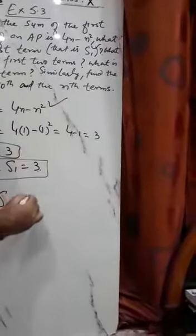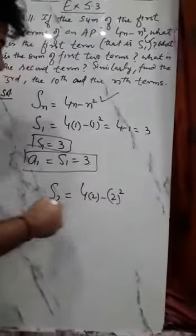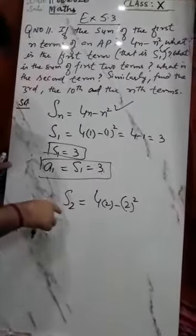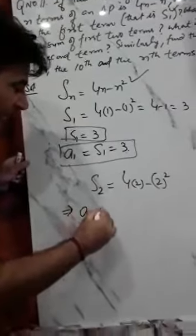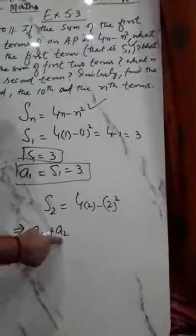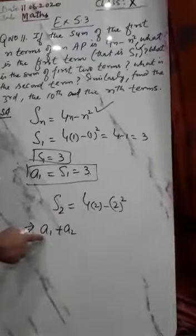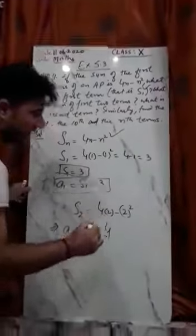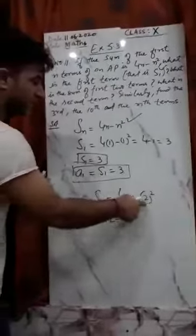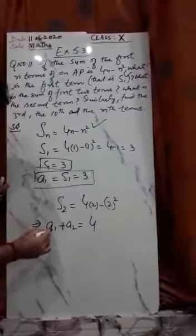Now, what is the sum of the first two terms? S2 means the sum of the first two terms — पहली 2 terms का sum. So we put n = 2: S2 = 4(2) - (2)² = 8 - 4 = 4. So S2 = 4.